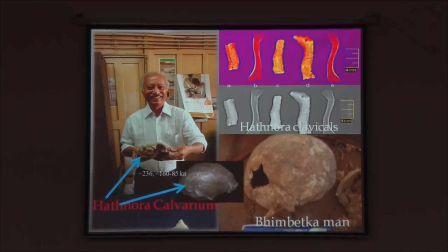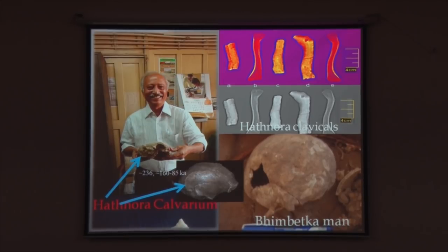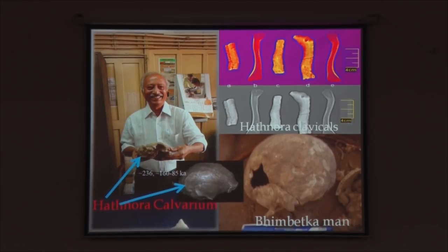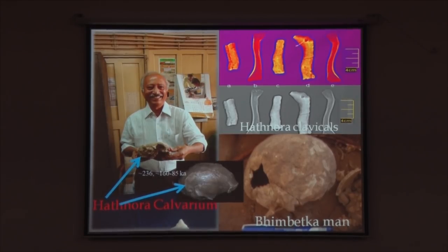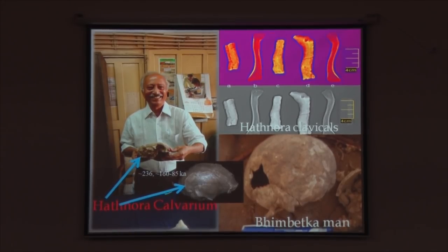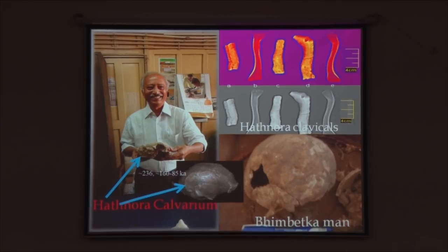The most important find in the Narmada Valley is a cranium now dated to between 236,000 and 160,000 years ago, though the context has been modified by later investigators. We were able to rediscover a human skull going back to the later Pleistocene in the personal collections of the late V.S. Wakankar. This has been subject to detailed study. The Anthropological Survey of India also reported associated fragments from Hathnora. We now have some hope of extracting ancient DNA from these specimens to understand the human population associated with the early settlements.